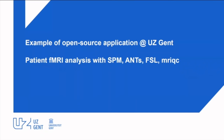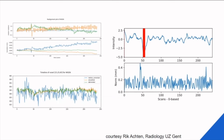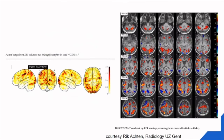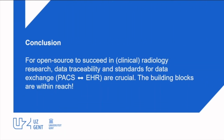For example, we do patient fMRI analysis with SPM in our hospital because the tools provided from Siemens just don't perform as we like. So we implemented our own SPM setup. Of course, there are liabilities, but in this case the radiologist himself decides: I like this and I trust this.